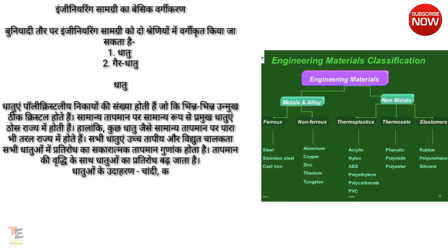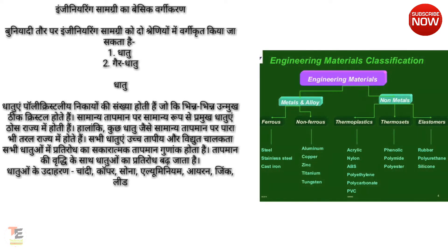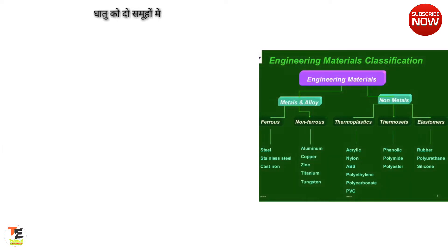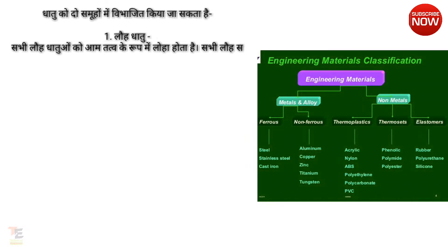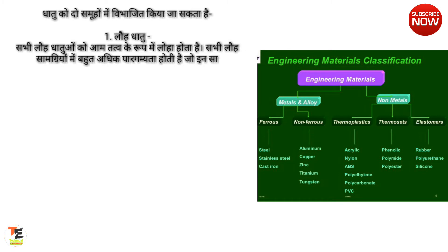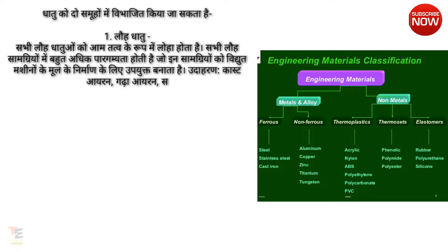Dhatuon ke udaharan: chandi, copper, sona, aluminium, iron, zinc, lead, tin. Dhatu ko do samoohon mein vibhajit kiya ja sakta hai. Loha dhatu — sabhi loha dhatuon mein aam tatv ke roop mein loha hota hai. Sabhi loha samagriyon mein bahut adhik paragamyata hai jo in samagriyon ko vidyut mashinon ke mul ke nirman ke liye upyukt banata hai.